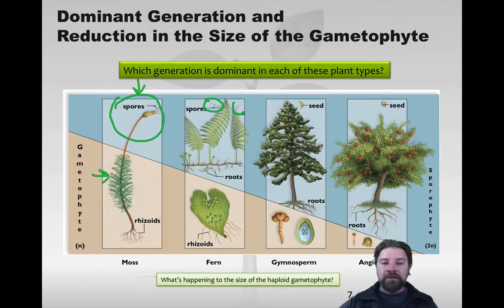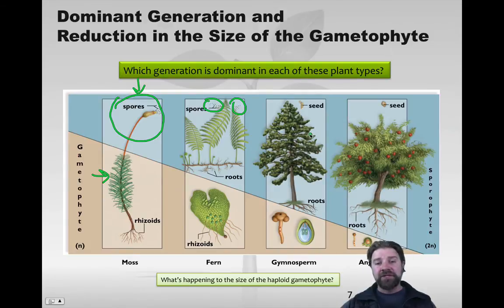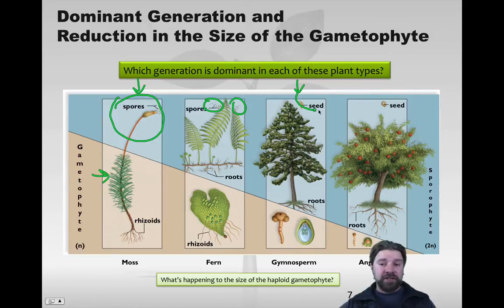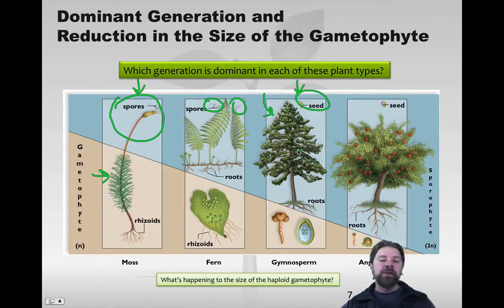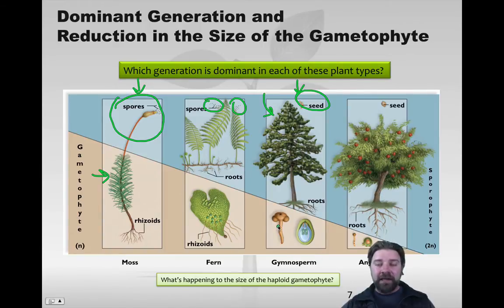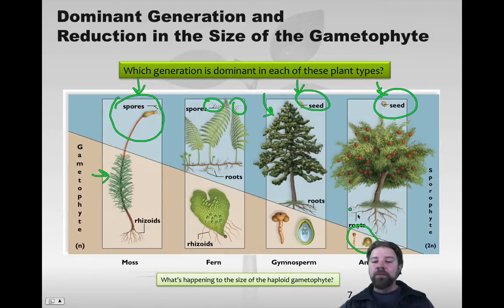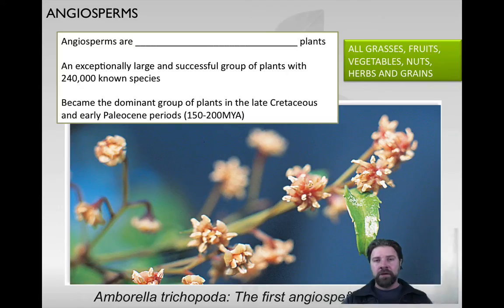Ferns also have a time in their lifespan where they form diploid fronds coming up from rhizoid horizontal roots just under the surface, and spores are released from the underside of fern leaves. Taking one step closer to today on the evolutionary timeline, we see gymnosperms - familiar conifer types. Gymnosperms were seed bearers, as were angiosperms, and becoming seed bearers allows the sporophyte to dominate the alternation of generations. In angiosperms, only a couple of small haploid structures remain, while most of the life cycle is dominated by the diploid sporophyte.